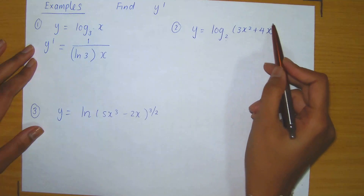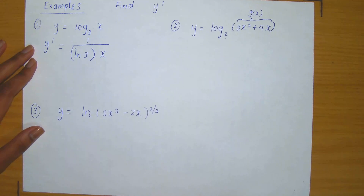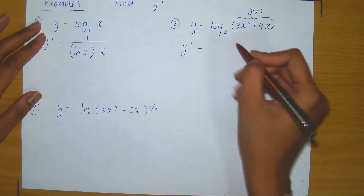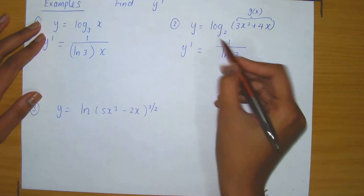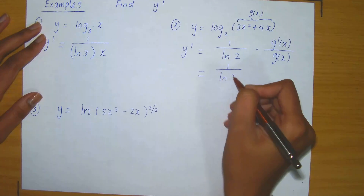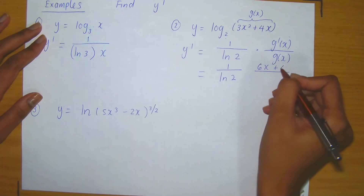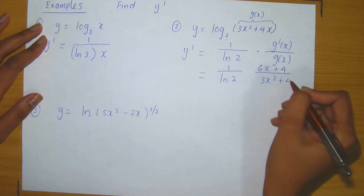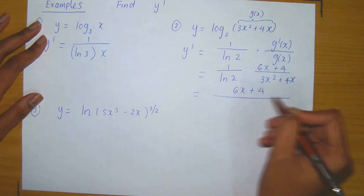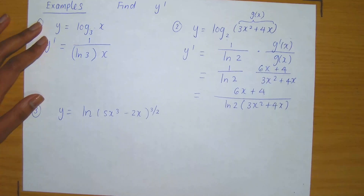Now observe it's log base 2 of a function, so we have an inner function here. This certainly requires the intervention of the chain rule. So y prime equals 1 divided by ln of 2, because the base is 2, times g prime of x divided by g of x. Plugging that information in, the inner function is 3x squared plus 4x, whose derivative is 6x plus 4, divided by g of x which is 3x squared plus 4x. There's not much to simplify — you can distribute the ln of 2 into each of those terms if you wish.